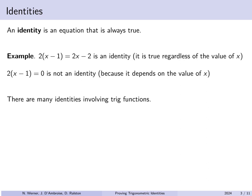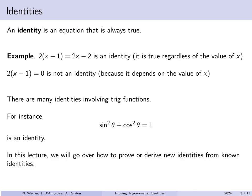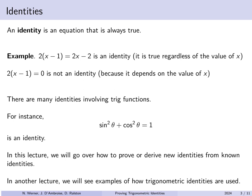There are many identities which involve trigonometric functions. For example, sine squared theta plus cosine squared theta is always equal to 1 — this is called the Pythagorean identity. In this lecture we'll go over how to prove or derive new identities from known ones, rather than using identities to compute values as in the previous lecture.